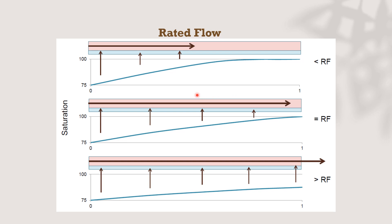In this diagram, we will see the rated flow for different oxygenators. Blood enters at 75% saturation with a hemoglobin concentration of 12 g/dL. If we use an ECMO flow less than the rated flow, the blood will come out close to 100% saturation. If ECMO flow equals rated flow, the blood will come out at 95%. But if we use ECMO flow more than rated flow, the blood will not be well oxygenated and there will be lower SpO2, and the patient will have hypoxemia.